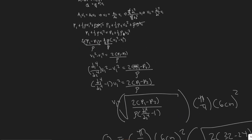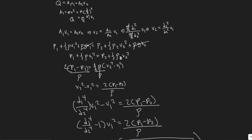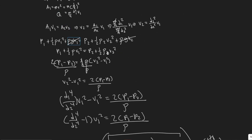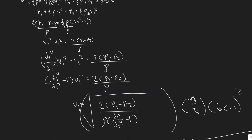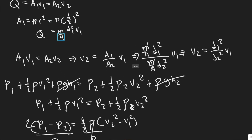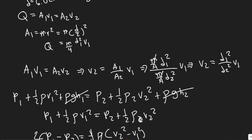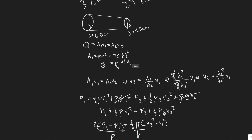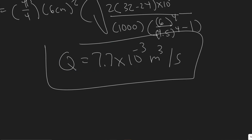To summarize: we used the Bernoulli equation and the continuity equation, substituted the continuity equation into Bernoulli's to eliminate V2, solved for the velocity V1, and then used that in the flow rate formula Q equals A times V. The flow rate is 7.7 times 10 to the minus 3 meters cubed per second.